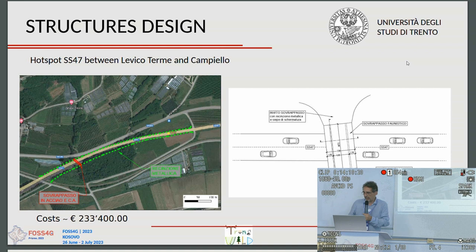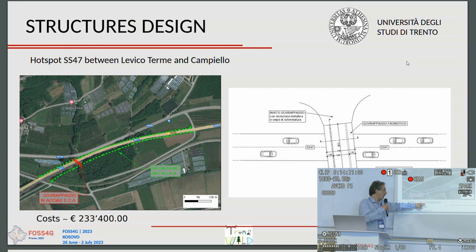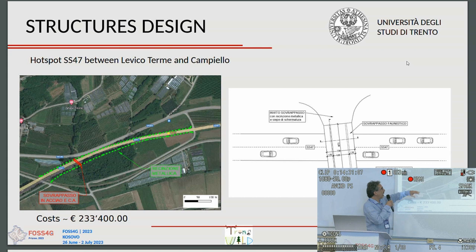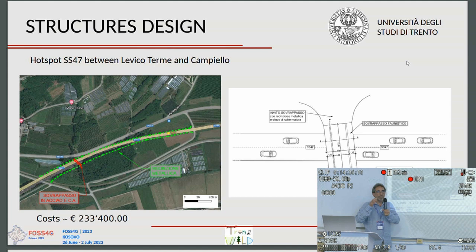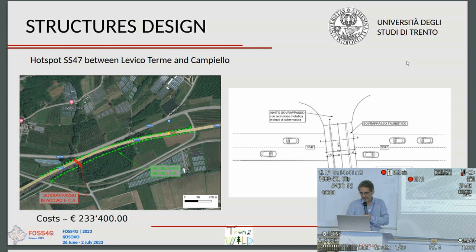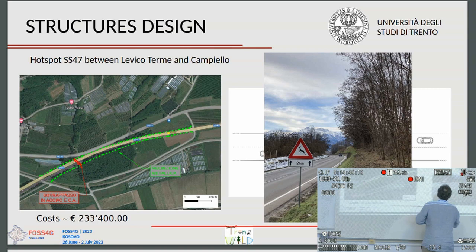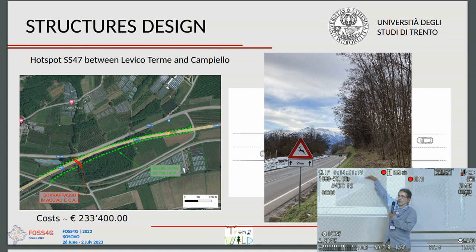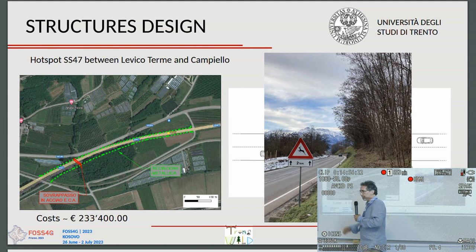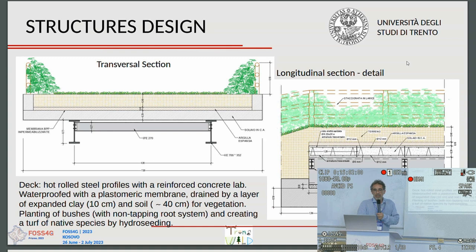For the Levico Terme–Campiello hotspot, we decided to build an overpass at a cost of 233,000 euros. The design invites animals by placing fences in the right locations to guide them in the correct direction. We exploited the local morphology — using the higher terrain on one side as a shoulder of the bridge, with the other shoulder on the opposite bank, to build the structure efficiently.